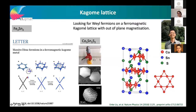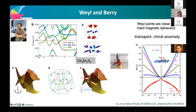Co₃Sn₂S₂ has a kagome lattice of cobalt, with tin and sulfide layers — it is quasi-two-dimensional from a magnetic viewpoint but difficult to cleave because of bonding between tin and sulfide. The band structure looks very promising: not many bands near the Fermi energy, with nice crossings. These are due to Weyl points; you see nodal lines without magnetic field, and Weyl points once magnetic field is applied. Because the compound is hard ferromagnetic it is easier to investigate.